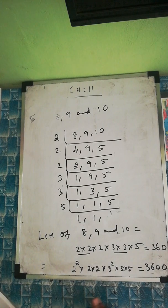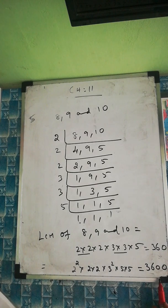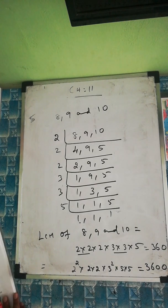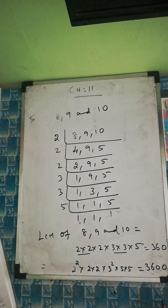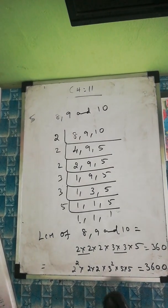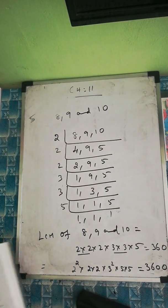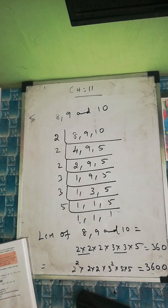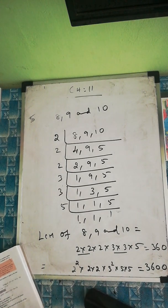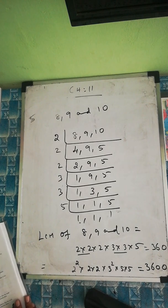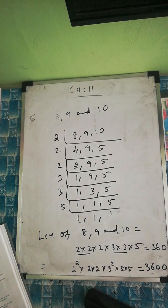Therefore, the smallest square number divisible by each of 8, 9, and 10 is 3600. Question 5 is now complete. Question 6 — try it yourself; it's not homework but good practice. That's the end of this exercise.